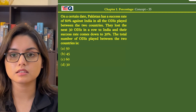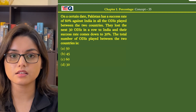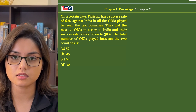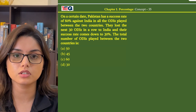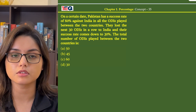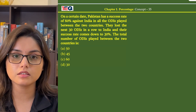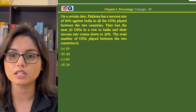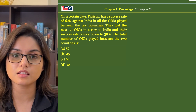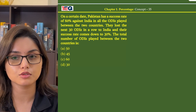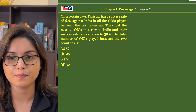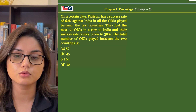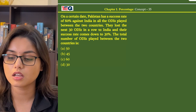On a certain date, Pakistan has a success rate of 60% against India in all the ODIs played between the two countries. They lost the next 30 ODIs in a row to India and their success rate comes down to 30%. The total number of ODIs played between the two countries is?